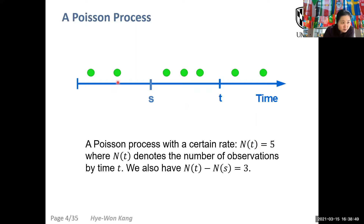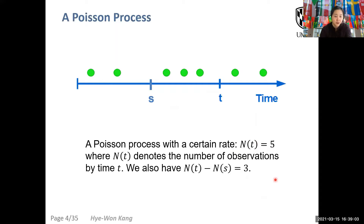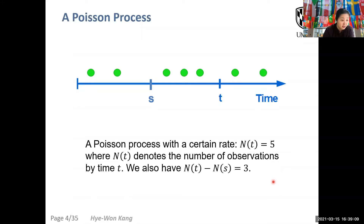N(t) counts the number of events from time zero to t. N(t) minus N(s) refers to the number of arrivals between time s and t. This Poisson process is usually used to describe the number of observations or events, and we will use a time-changed Poisson process to count the number of occurrences of each reaction up to time t.